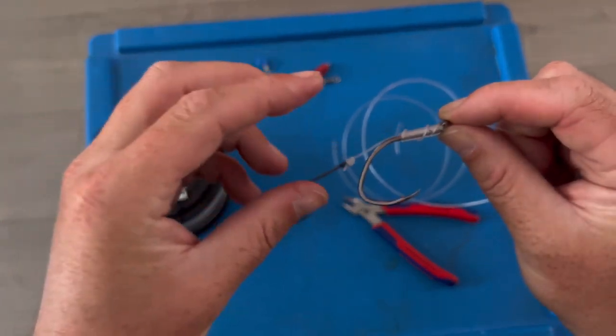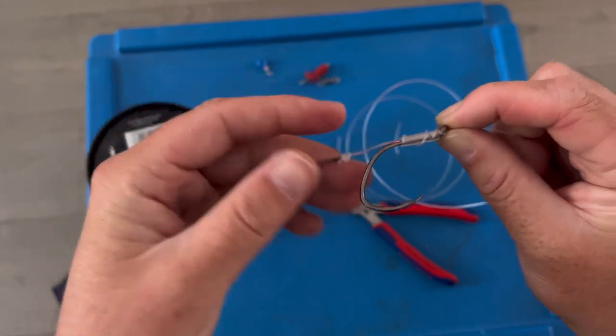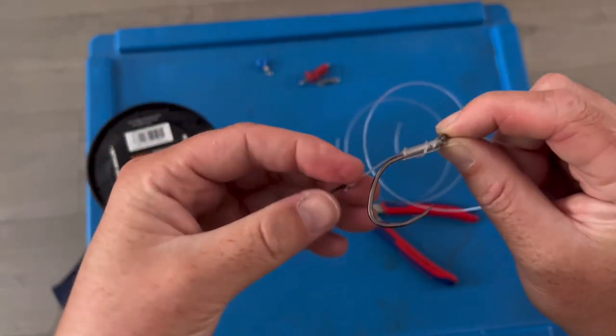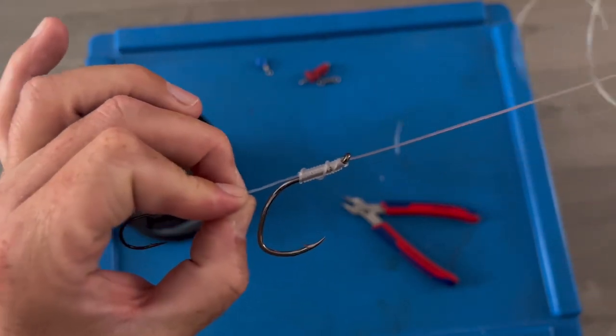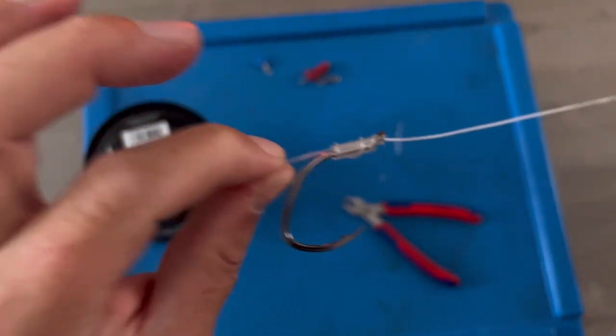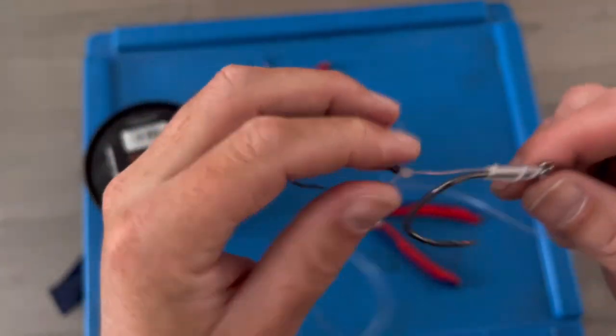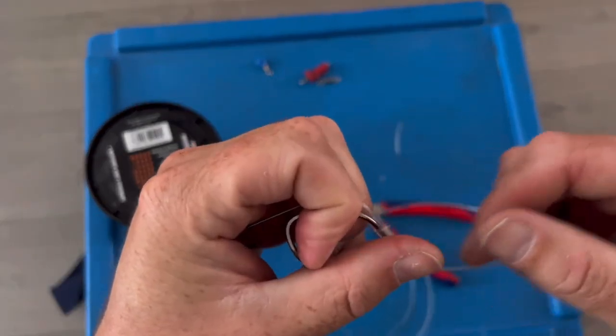Essentially what you're doing then is just baiting this up with some worm, bit of mackerel or something for a whiting. He takes it in his mouth, leaves that nice big hook then nice and proud to catch maybe a nice bass, nice cod.